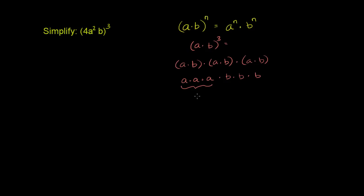And so this over here is going to be a to the third, and this right over here is going to be equal to b to the third. So we have a to the third times b to the third. So it worked. And hopefully that gives you a sense of why this property holds.